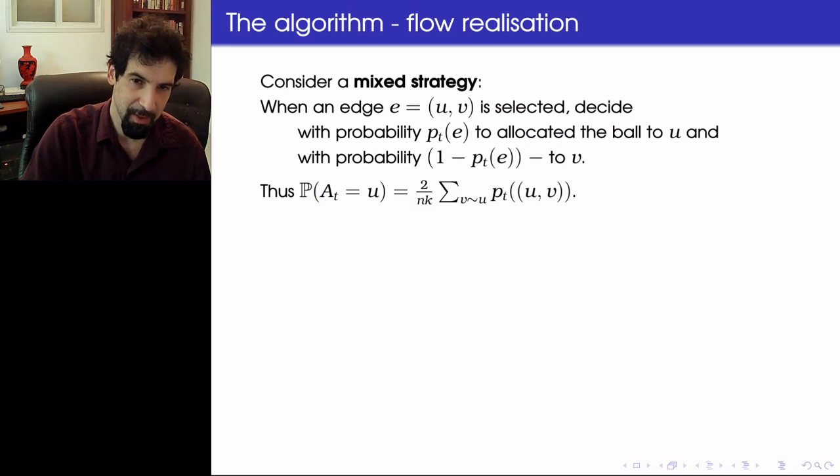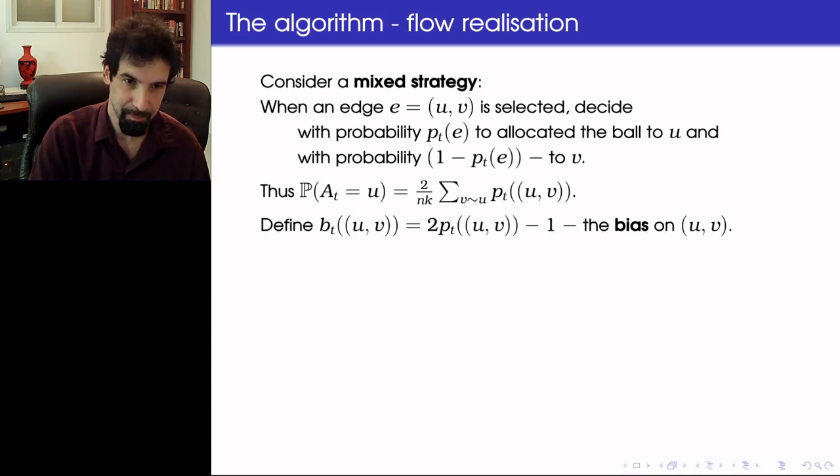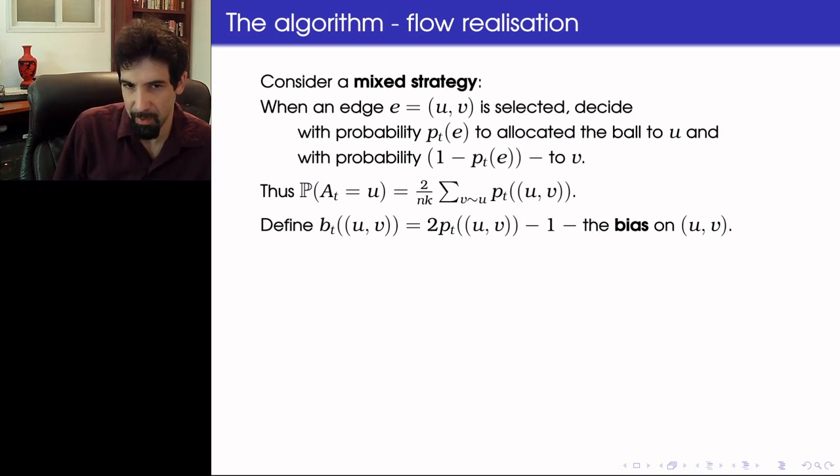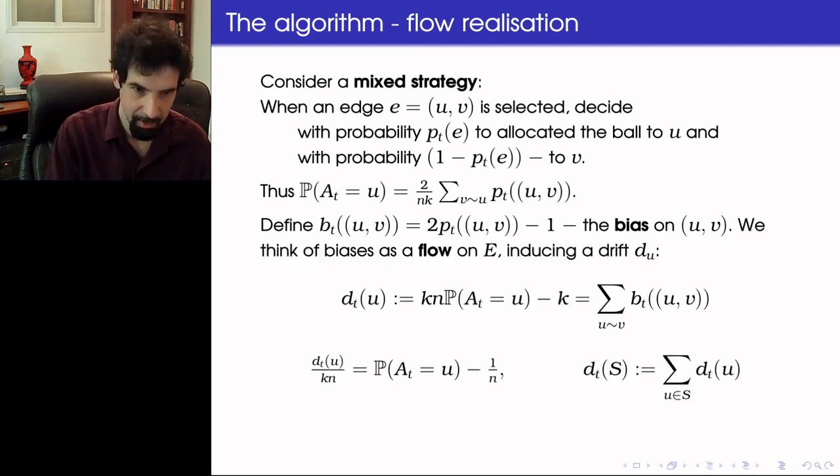And I'm going to describe the strategy in terms of these probabilities. So the allocation to any vertex now would be the probability of selecting any particular edge, 2 over Nk, times the sum of the probability over all the neighbors of this vertex, given that the connecting edge was selected, the probability of allocating to the particular vertex. Now we define the bias of every edge to be the amount by which we tilt it in a sense, so the difference between the probability of allocating to u and the probability of allocating to v if this edge is selected. So if this is half and half, the bias is zero. And we can think of such a bias as a flow, as it draws probability from allocating to v and moves it to probability to allocate to u. And such a flow induces a drift, so the total change in allocation probability.